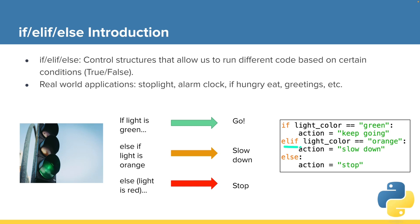Otherwise, or elif, this is how that otherwise condition is set in Python. Light color, if light color is orange, then set our action to the value of slow down. And finally,